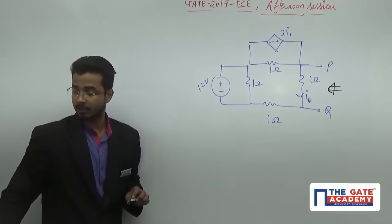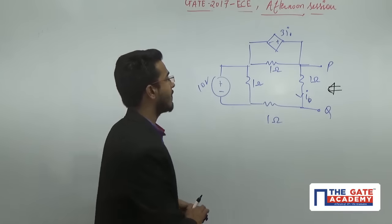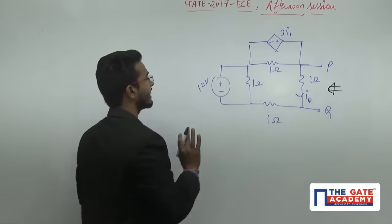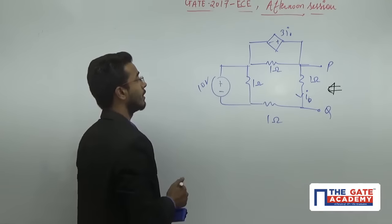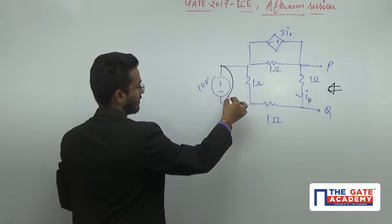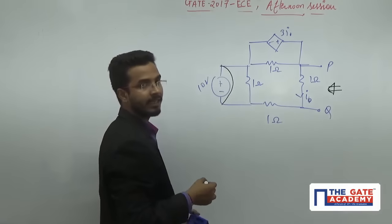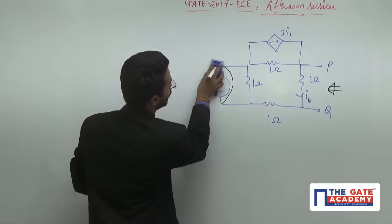What is the first step of the test source method? We have to remove all the independent sources by their internal impedances. Here we have one battery of 10 volts, so I have to replace it with its internal impedance. We know the internal impedance of the battery is zero, which means I will do a short circuit.